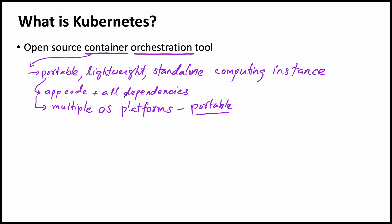The next property is lightweight — what makes it lightweight? The container doesn't include the operating system; the OS kernel is not included as part of the container image. That actually reduces the size compared to a virtual machine image, which is like 11.5 GB, whereas a container image may be 70 MB or 80 MB. So one reason why it is lightweight is no OS.